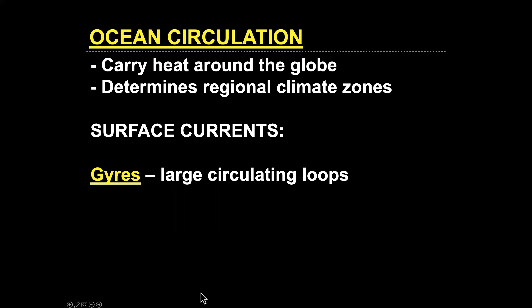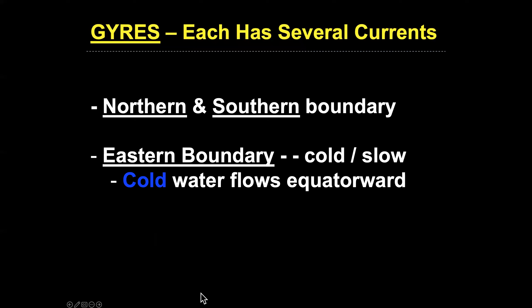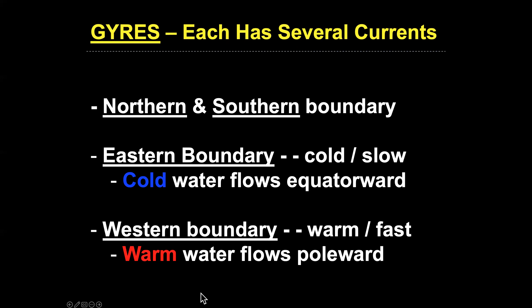There are surface currents called gyres — large circulating loops. There are five of them: two in the Pacific, two in the Atlantic, and one in the Indian Ocean. The eastern half of the circulation in the Pacific and Atlantic tends to be cold, while the western half tends to be warm and fast. The eastern boundary carries cold water flowing down toward the equator from higher latitudes, while the western boundary flows northward — or southward in the southern hemisphere — toward the pole.